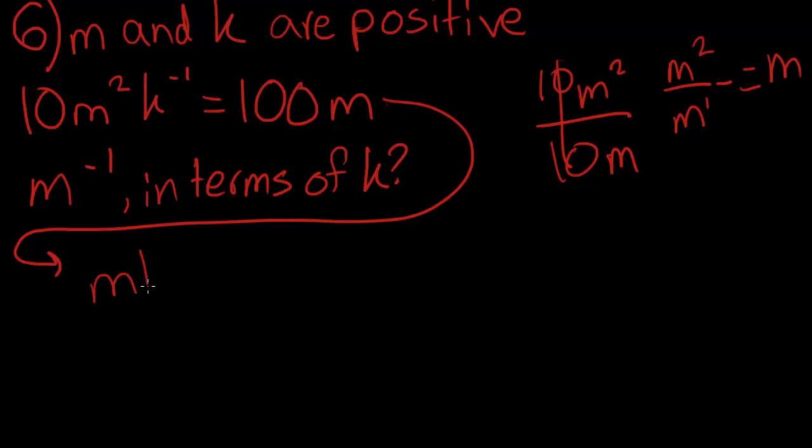M times K to the power of negative 1 is equal to 100M divided by 10M is 10. Another way to write K to the power of negative 1 is 1 over K, and 1 times M is M, so M over K is equal to 10. If we cross multiply here, we'll get M is equal to 10K after cross multiplication.